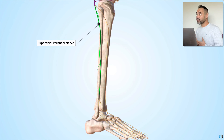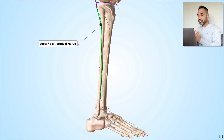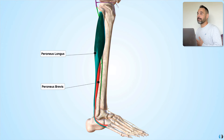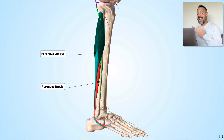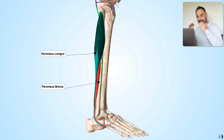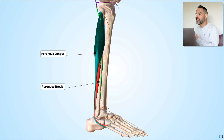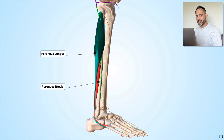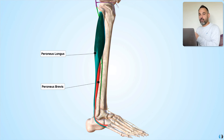Looking at those lateral muscles — lateral superficial — they are supplied by the superficial peroneal nerve. We're thinking about muscles such as peroneus longus and peroneus brevis, also known as fibularis longus and fibularis brevis, which evert the foot. So if your patient presents with back pain, pain running down the leg, and weakness in eversion — now you know why. The superficial peroneal nerve innervates these muscles, and when that nerve is dysfunctional, they lose eversion strength. Remember: anterior, deep; lateral, superficial — and both stem from the sciatic nerve.